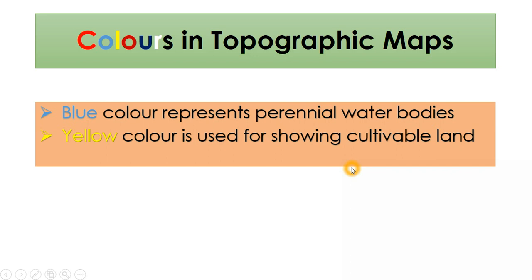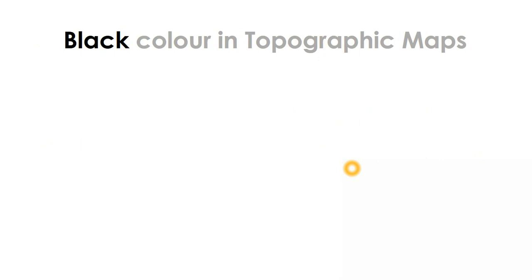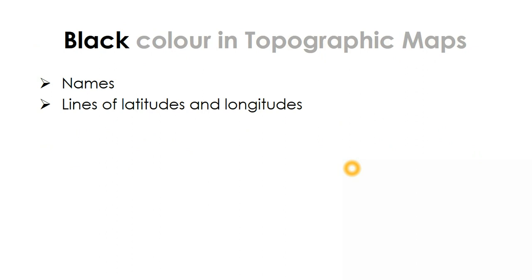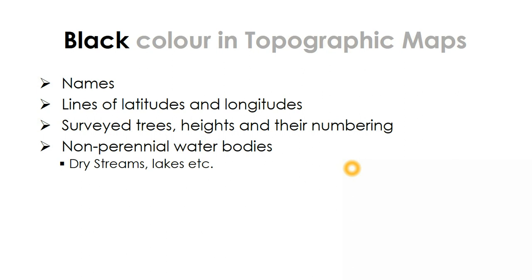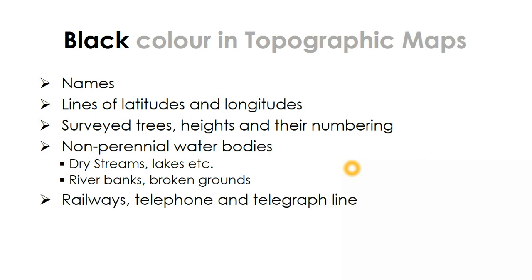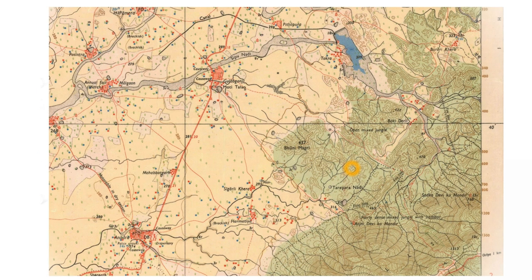Let's continue with the remaining five colors. Black color — I already told you this but I want to explain it once again. Black color is used for various things like writing names of places, drawing lines of latitudes and longitudes and writing their values, survey trees and their numbers, heights like spot heights and benchmarks. Non-perennial water bodies like dry streams, lakes, ponds, and riverbanks and broken grounds are also shown using black color.